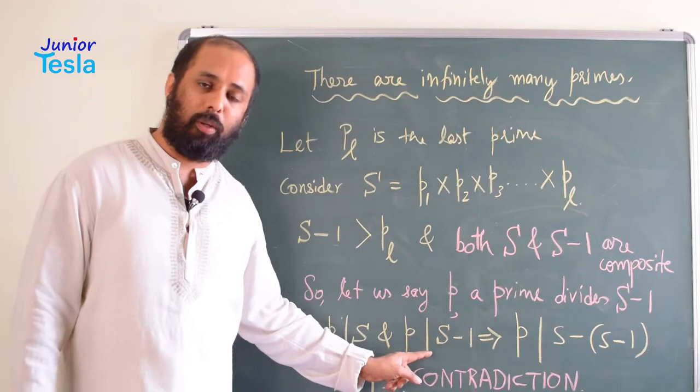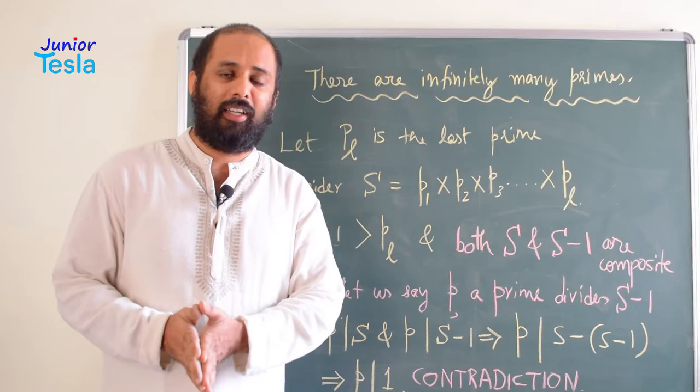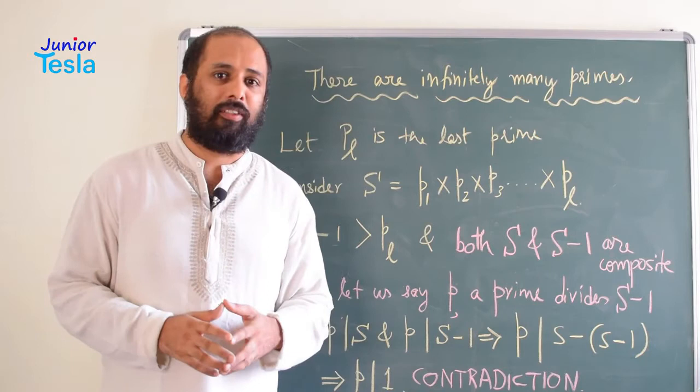Now, if P divides S and S minus 1 both, then P divides S minus S minus 1, correct? If A divides B and A divides C, then A divides B plus or minus C. So similarly, if P divides S and P divides S minus 1, then P divides S minus S minus 1.